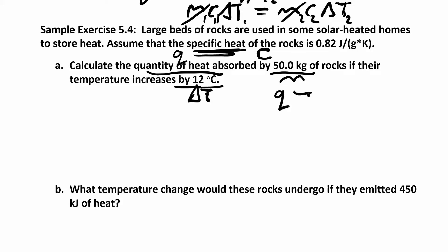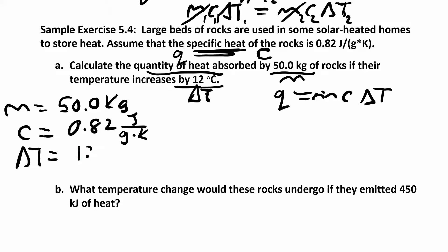The equation that we're looking to use here is q equals mcΔT. m is given to us, m is 50 kilograms, and c was given to us in the first part, that's 0.82 joules per gram Kelvin, and ΔT is 12 degrees C, which is the same in Kelvin, so that's the same as 12 Kelvin because we're looking at the change in temperature. When you look at these units, you have kilograms and grams can't be together. Let's try to get everything into grams. In one kilogram there are a thousand grams, so you have 50,000 grams.